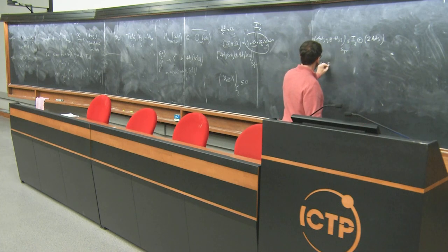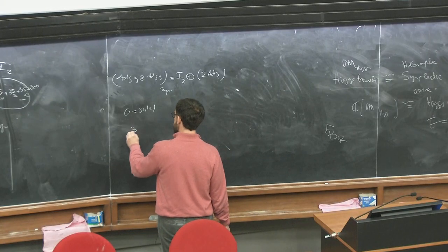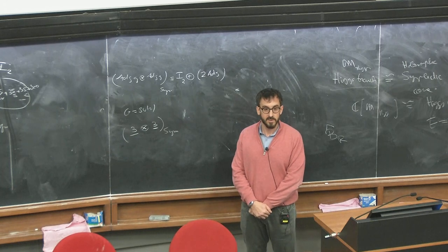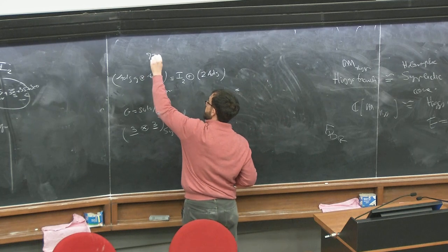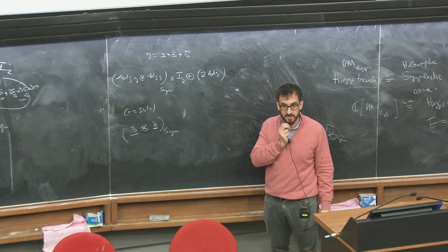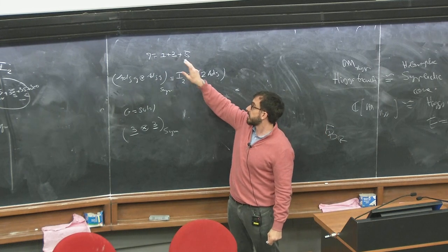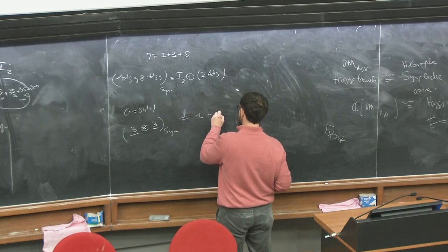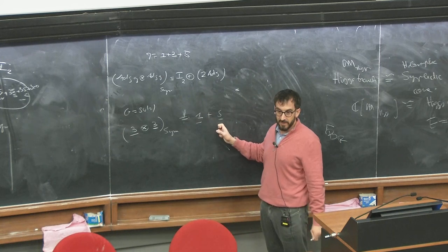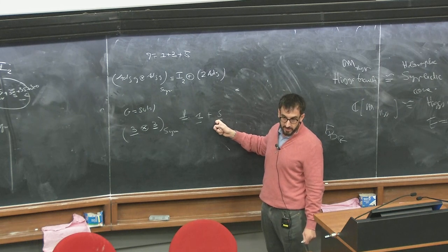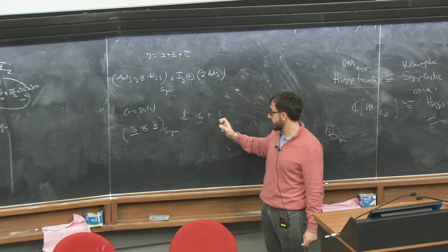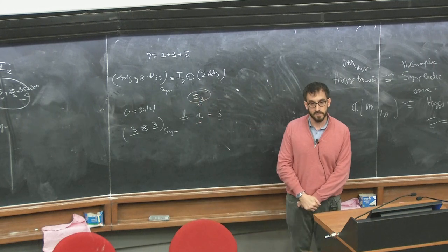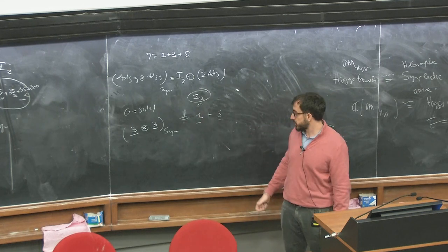Let's do another example: take G = SU(2). The adjoint of SU(2) is the 3. The symmetric product of two triplets gives 1 plus 5. The 5 is the object whose Dynkin label is twice the Dynkin label of the adjoint: the adjoint has Dynkin label 1, and the 5 has Dynkin label 2. So in this case I_2 is the singlet — this is what I call I_2 here.